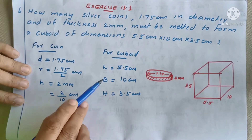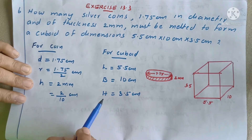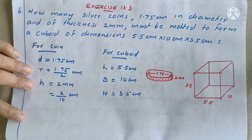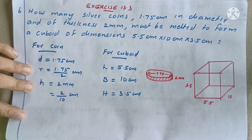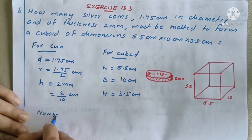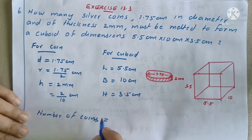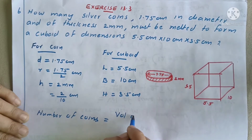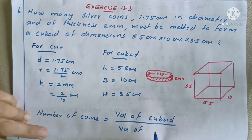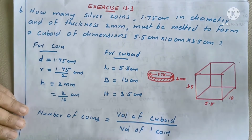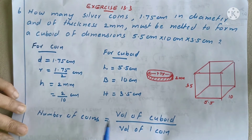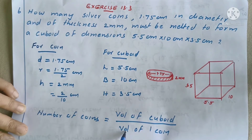Note that capital H is the height of the cuboid, and lowercase h is the height of the coin, to avoid confusion. If volume of cuboid equals volume of one coin times the number of coins, then number of coins equals volume of cuboid divided by volume of one coin. We will use the formula for volume of cuboid and volume of one coin.